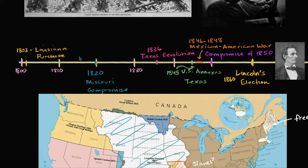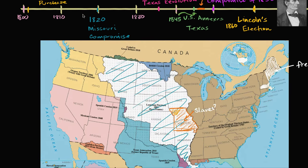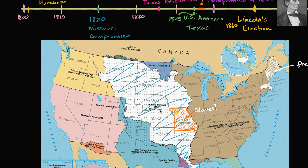You have the Louisiana Purchase in 1803 that adds all of this territory. You start having states getting carved out. Once you get a critical mass of people in a certain territory, they can apply to be a state. And as each of these states are added and they want to get representation, it's a political issue.